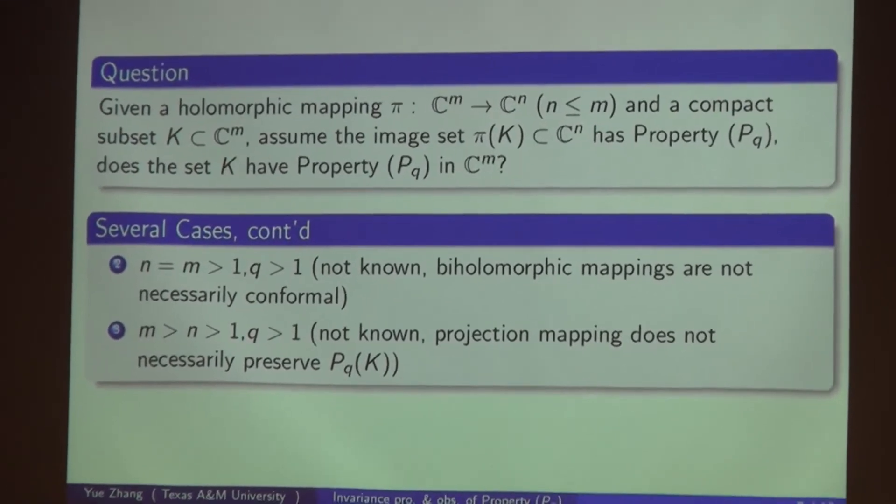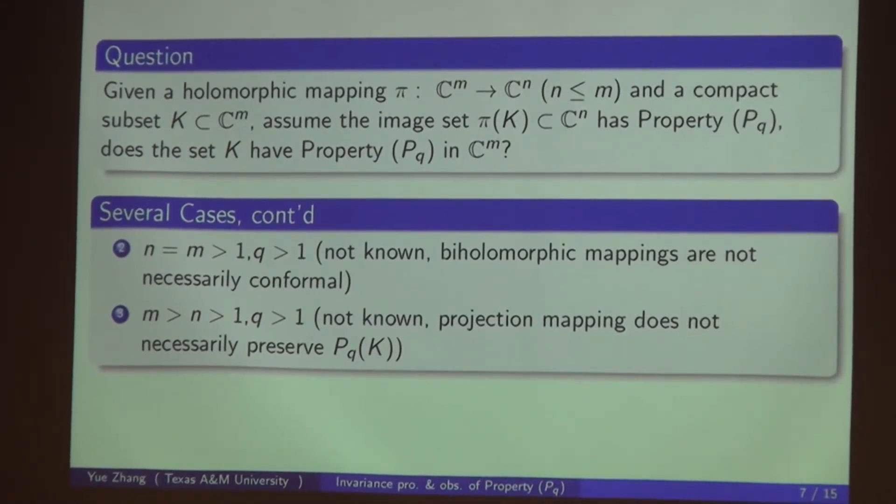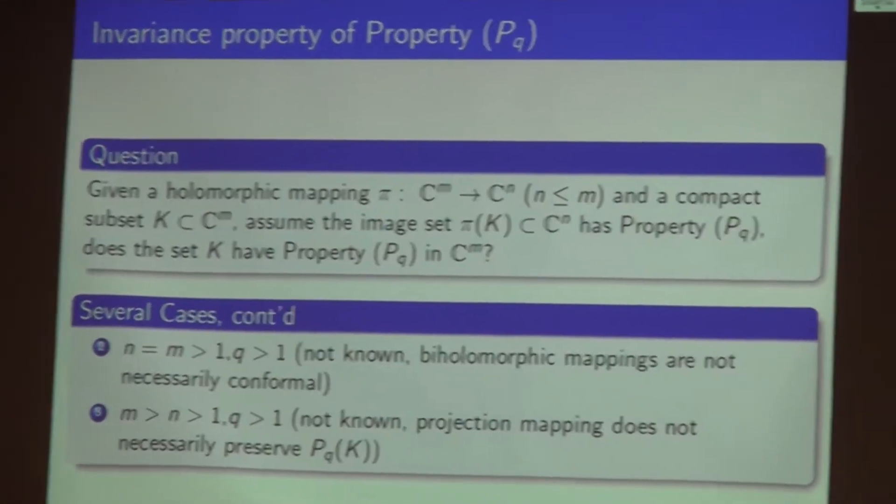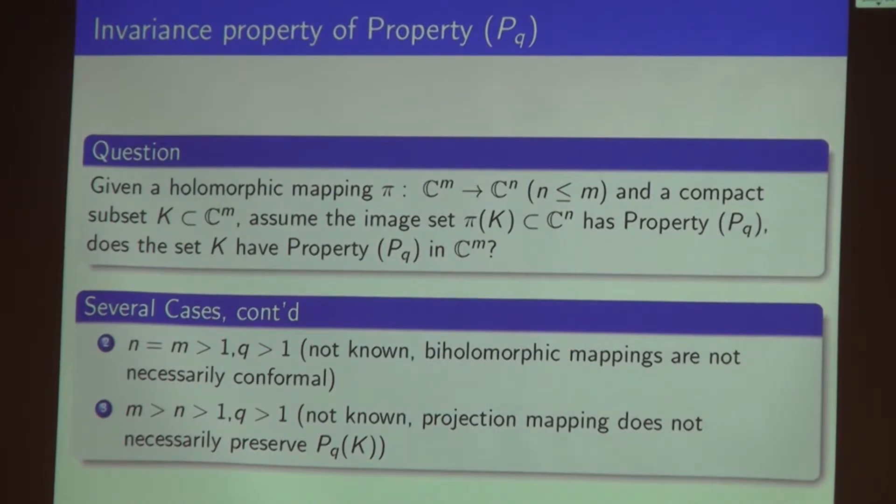There are more cases if you go into higher level forms. The case m equals n greater than 1 and q greater than 1 is not known. If you come back to the case of q equal to 1, biholomorphic mappings, if you look at pi being biholomorphic mappings, they no longer necessarily preserve property P_Q. The reason is those biholomorphic mappings are not known to be conformal in such case. The third case is m greater than n greater than 1 and q greater than 1, and the case is still unknown.